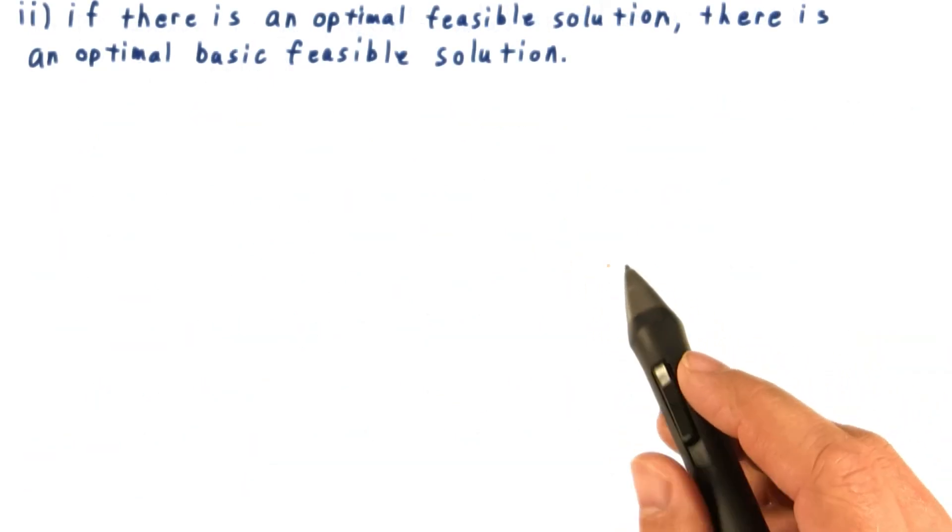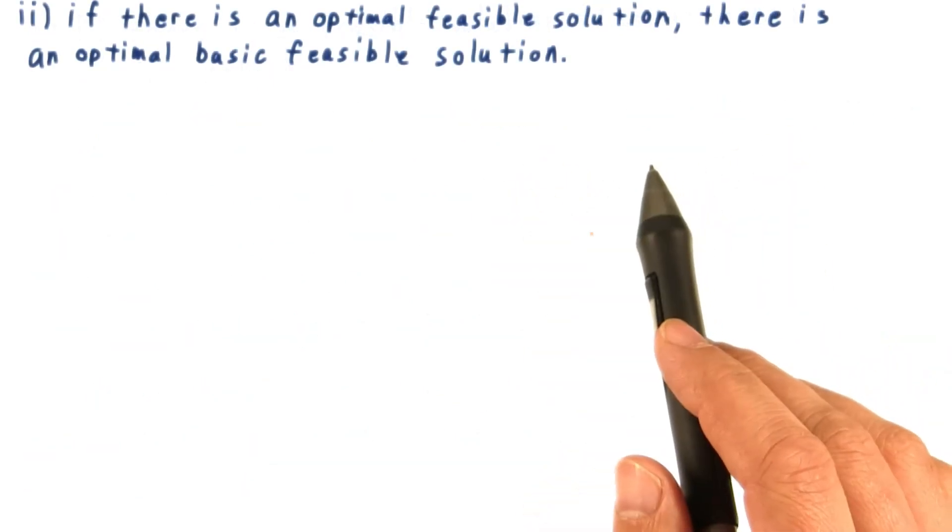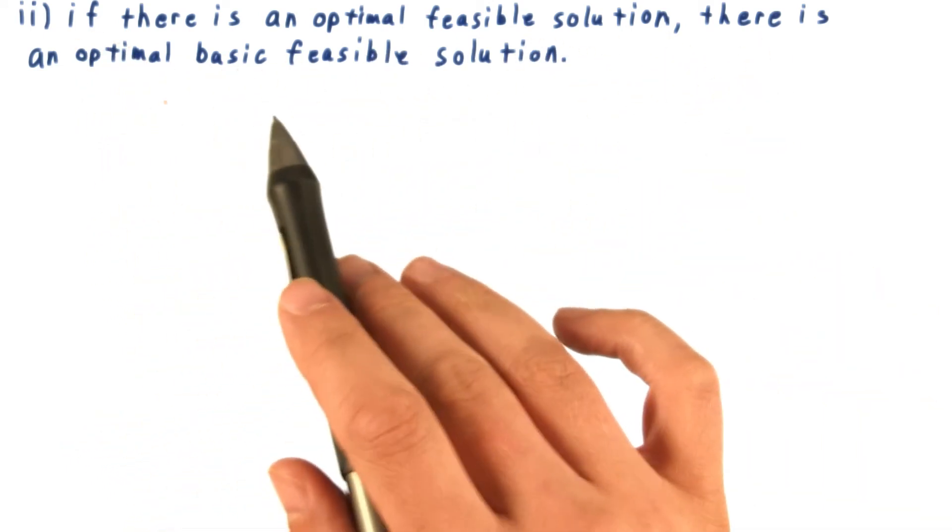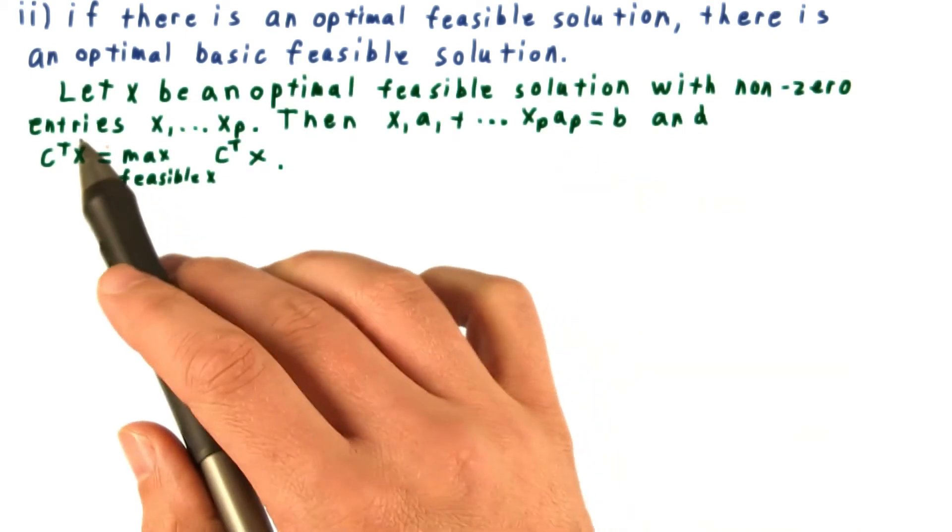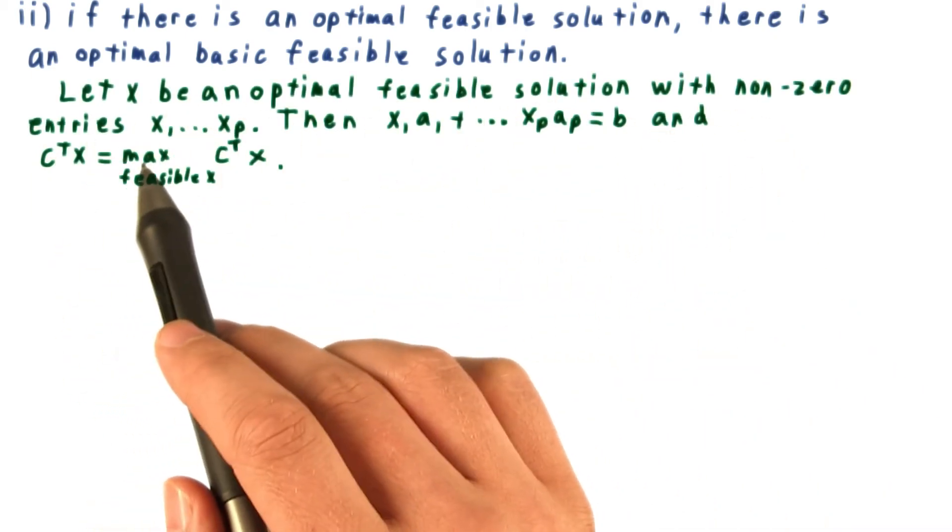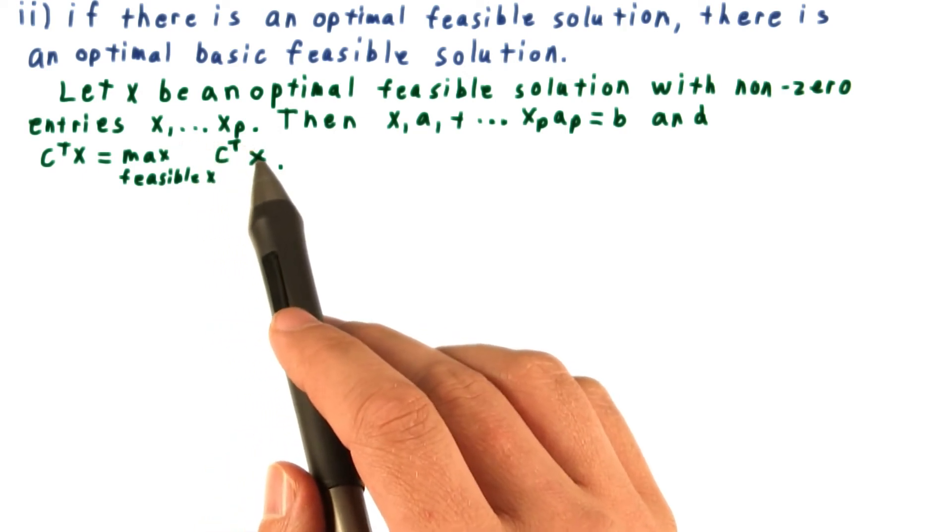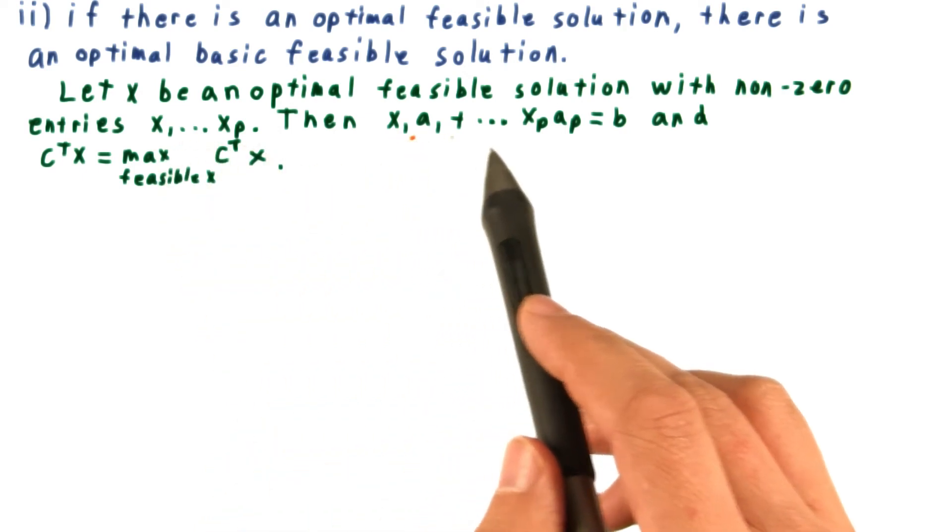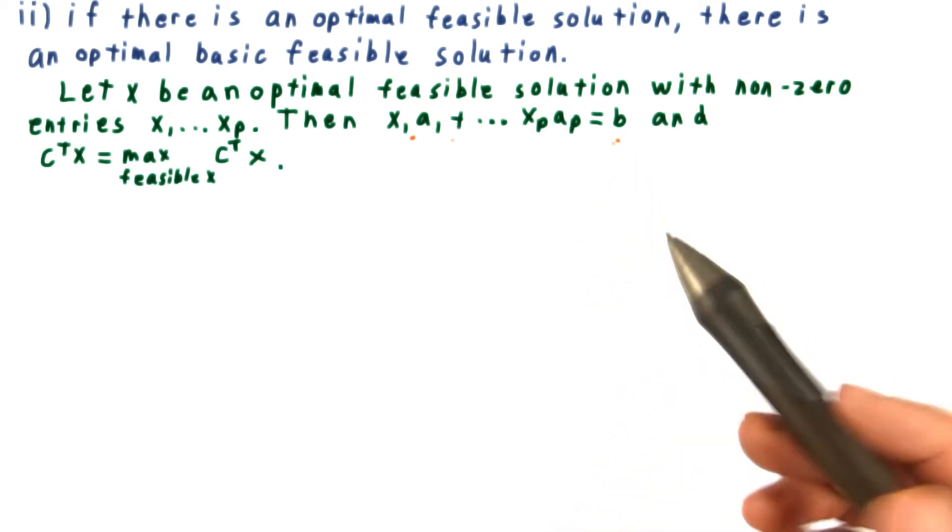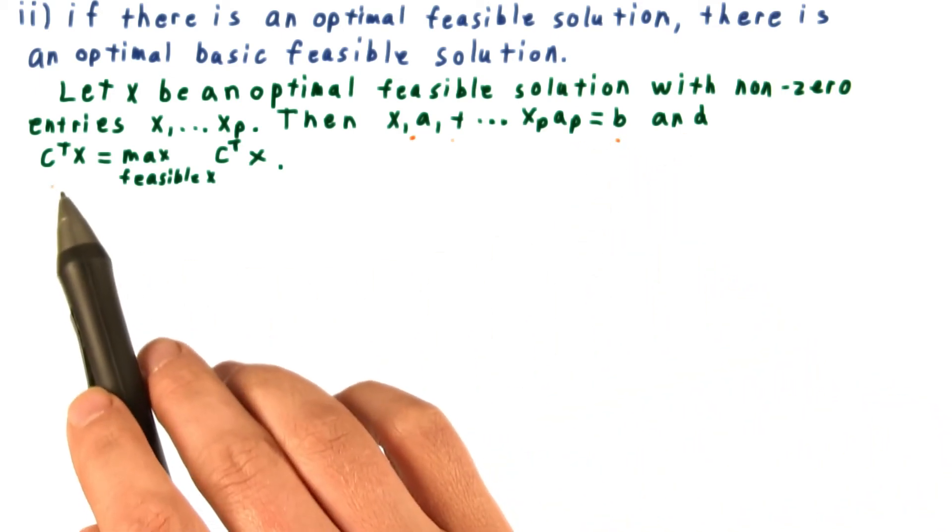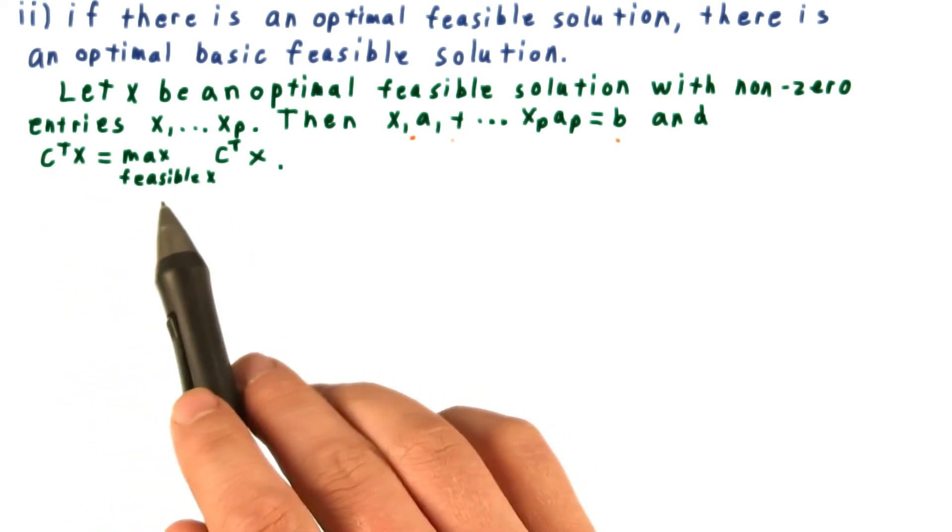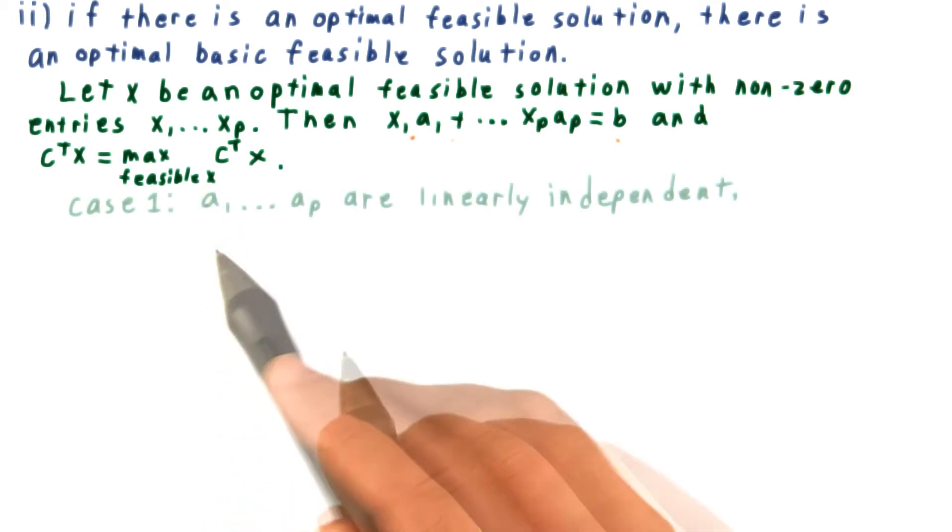Now onto part 2 of the theorem. This will feel similar to the first part. We want to show that if there's an optimal feasible solution, there's an optimal basic feasible solution. We let x be an optimal feasible solution with non-zero entries x1 through xp. Well, it's feasible, so this linear combination of the columns of A must be equal to b, and because it's optimal, its objective value, c transpose x, must be the maximum over all possible feasible x.